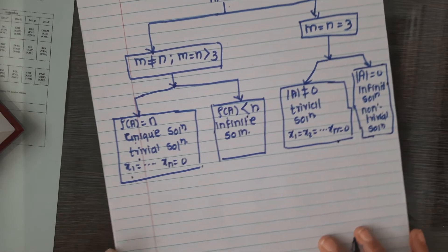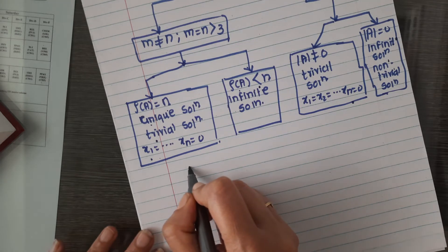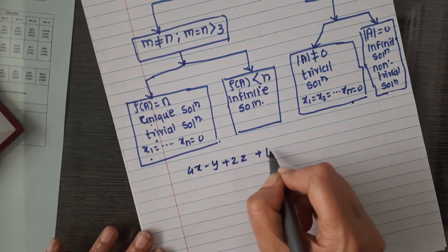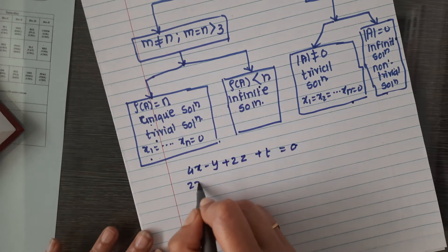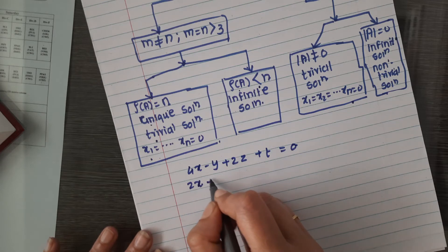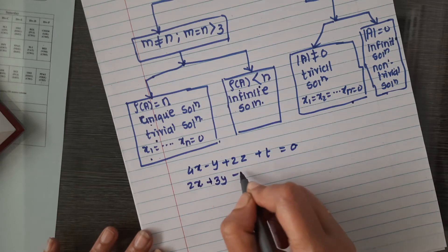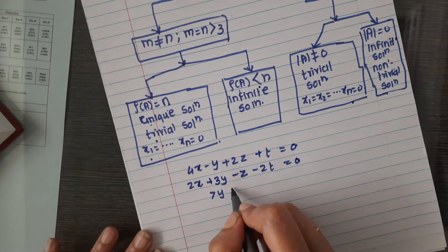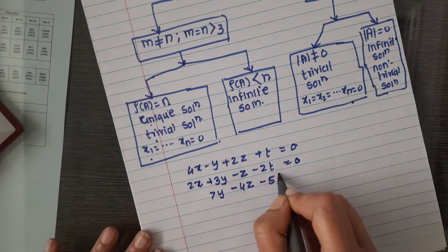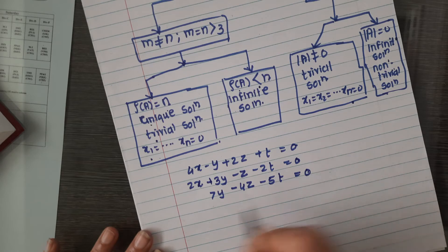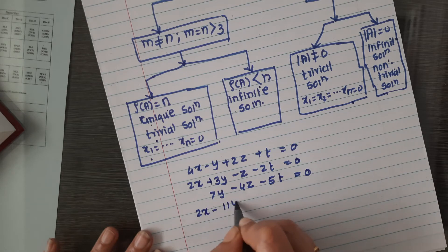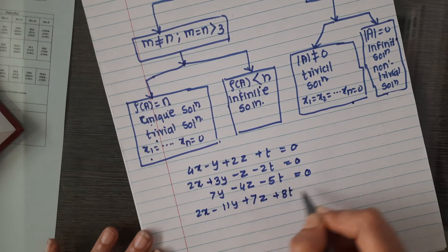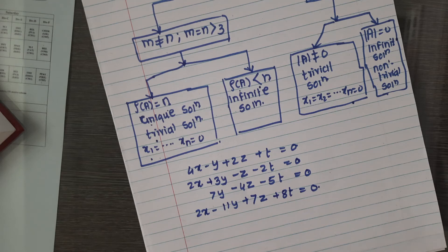We will take one example. The system is: 4x minus y plus 2z plus t equals 0; 2x plus 3y minus z minus 2t equals 0; and 2x minus 11y plus 7z plus 8t equals 0.